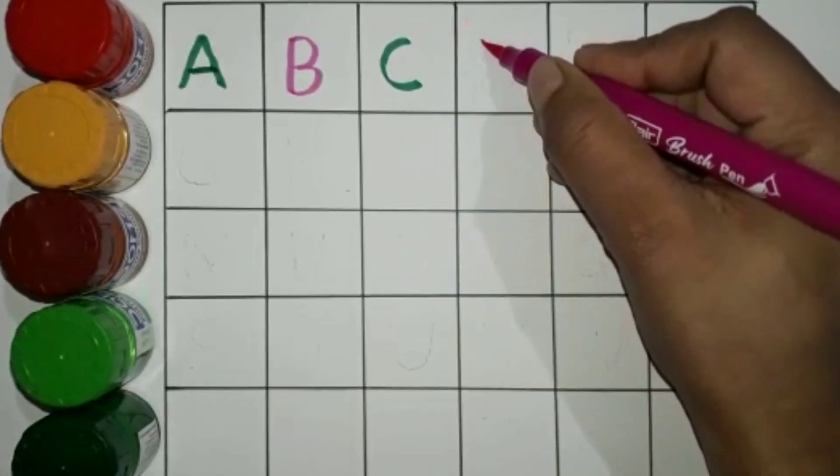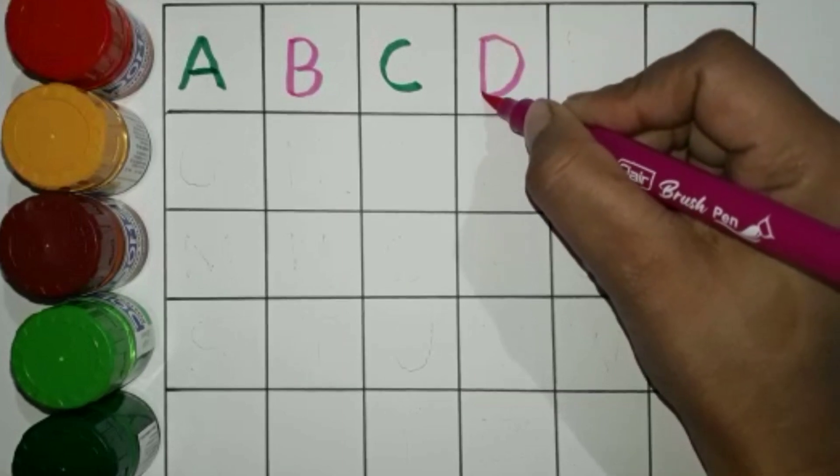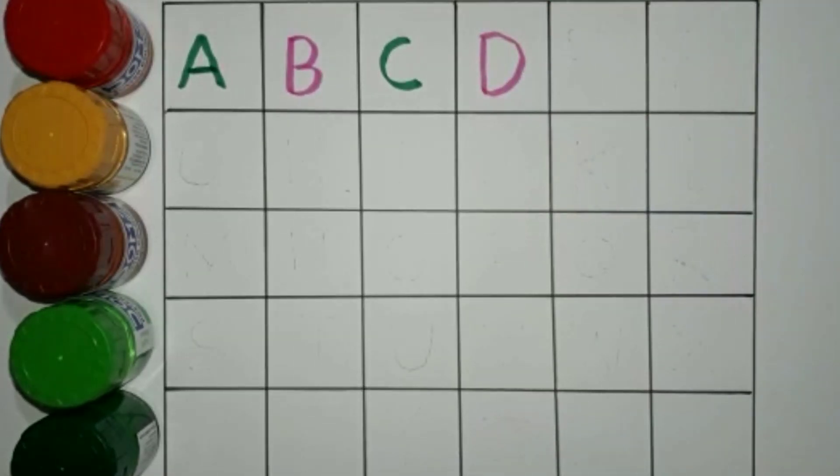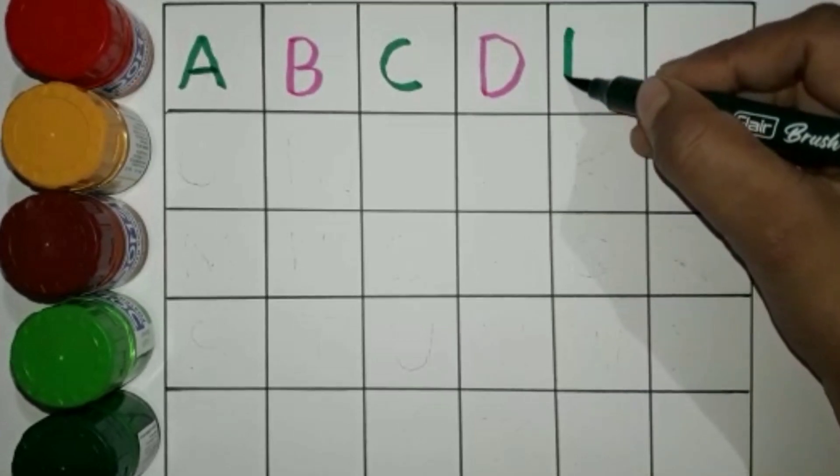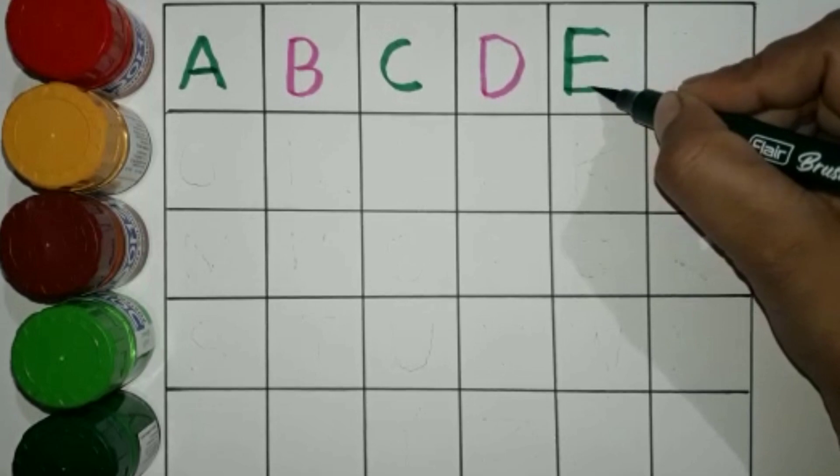Pink color. D. D for Dog. Green color. E. E for Elephant.